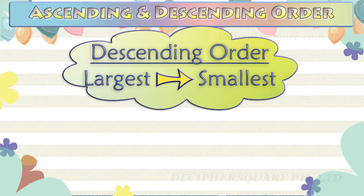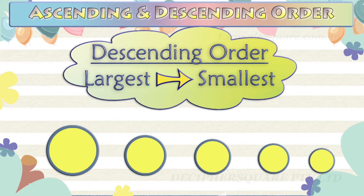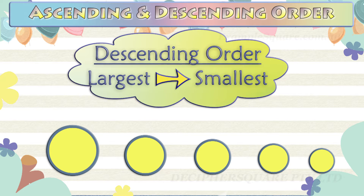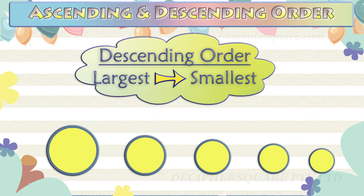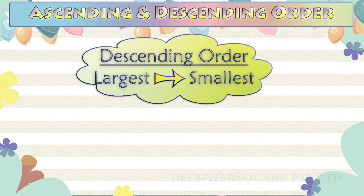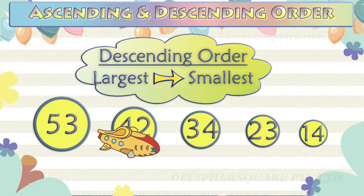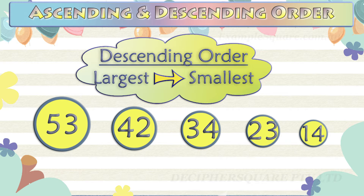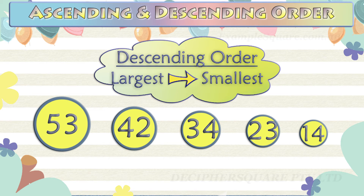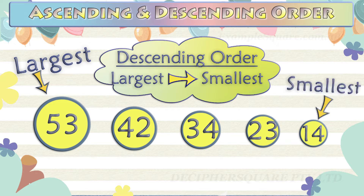Arranging numbers in a descending order means to arrange the numbers in decreasing order, that is from the largest to the smallest. For example, these numbers are arranged in descending order, that is from the largest number to the smallest number. So when the numbers are arranged in descending order, the largest number comes first and the smallest number comes last.